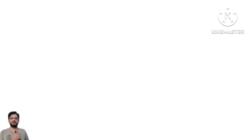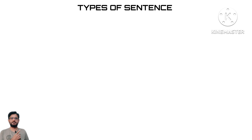As-salamu alaykum dear students, welcome to a new video of mine. Today we are going to discuss a topic related to English grammar, and today's topic is types of sentences in English grammar. There are four different types of sentences used in the English language: number one is called simple sentence, number two is compound sentence, number three is complex sentence, and number four is called complex compound sentence. All four of them we are going to discuss in today's lecture.